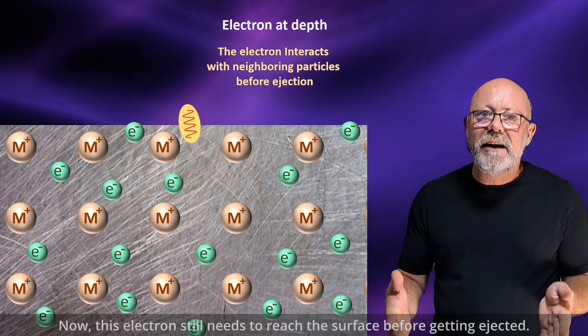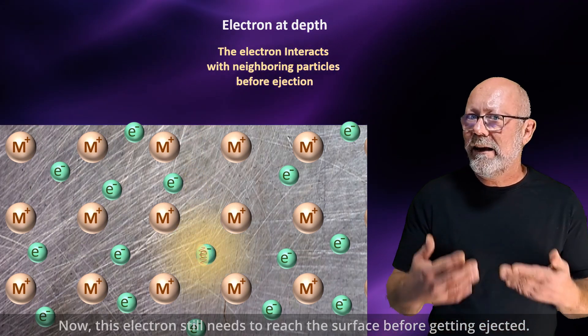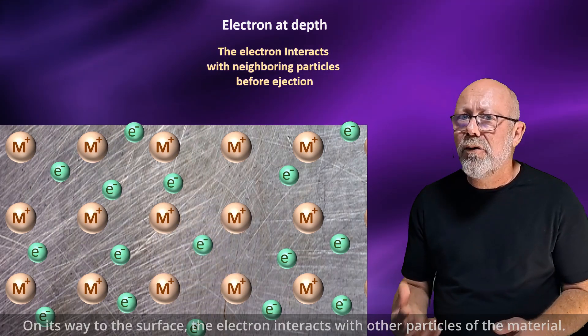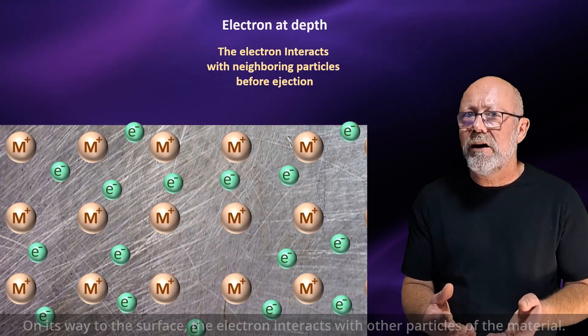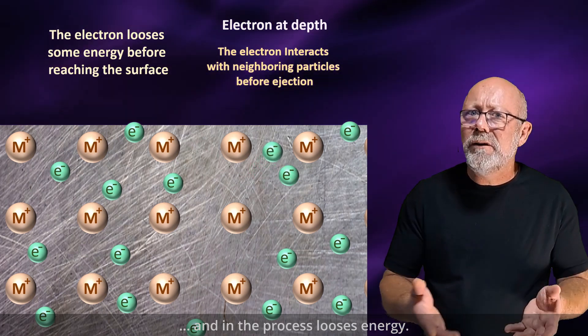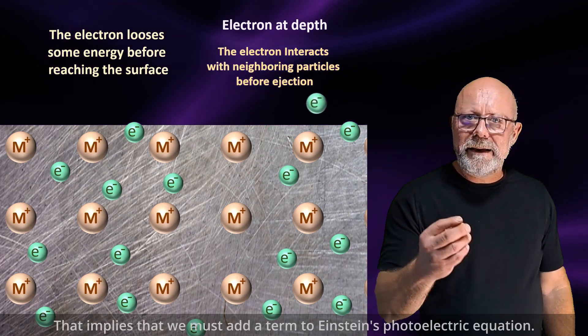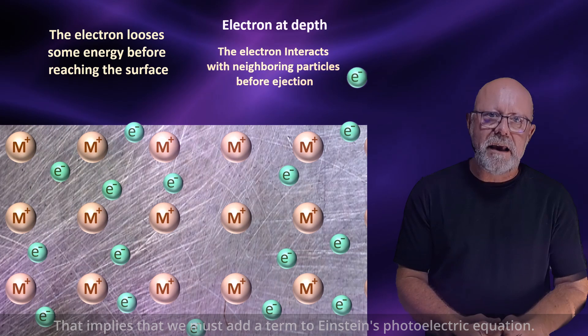And now, this electron still needs to reach the surface before getting ejected. On its way to the surface, the electron interacts with other particles of the material and, in the process, loses energy. That implies that we must add a term to Einstein's photoelectric equation.